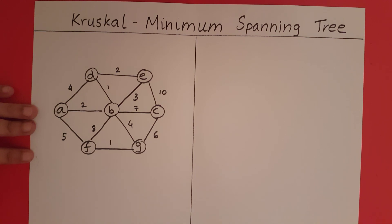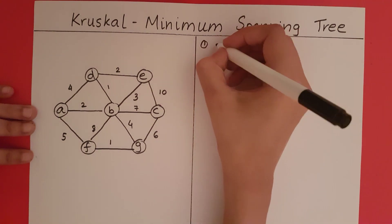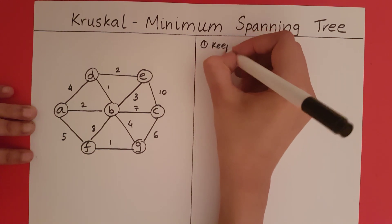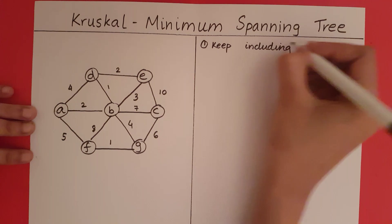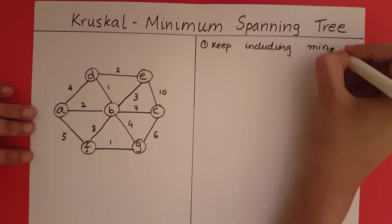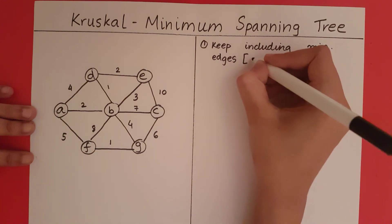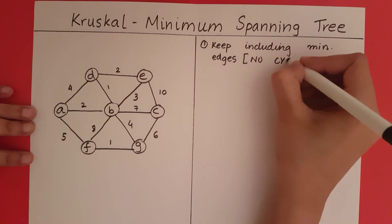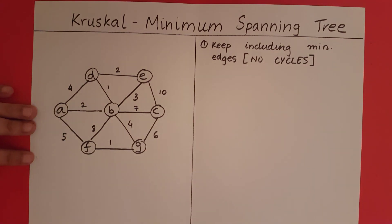So what we are going to do in Kruskal's algorithm is we are going to keep including the minimum edges as long as no cycles are formed. Once we cover all the vertices, we stop. So let's start.